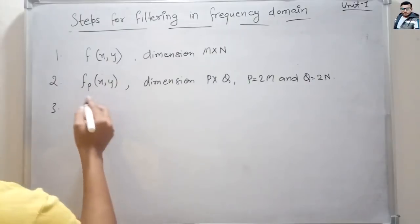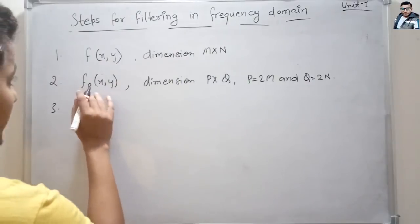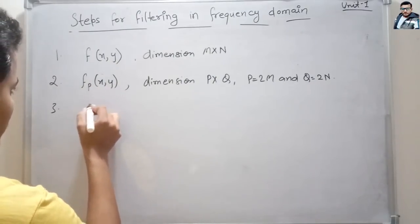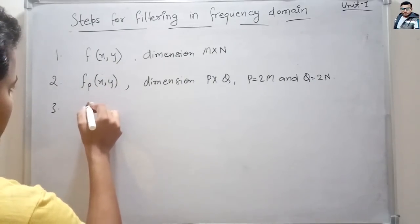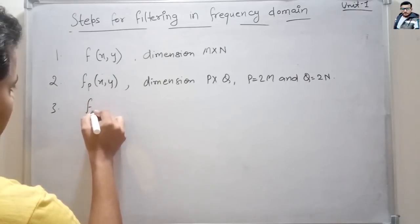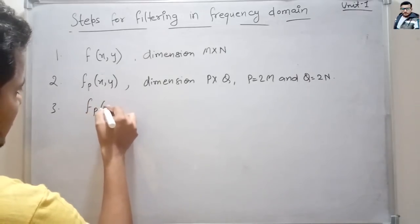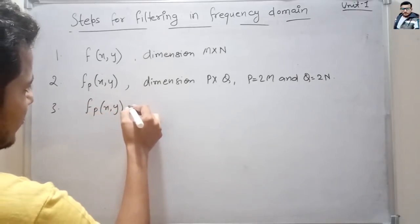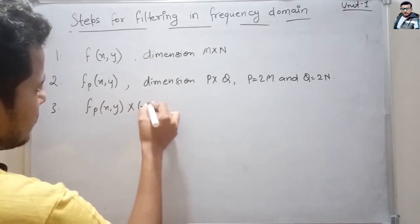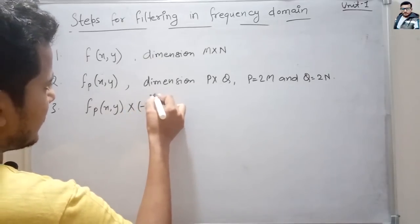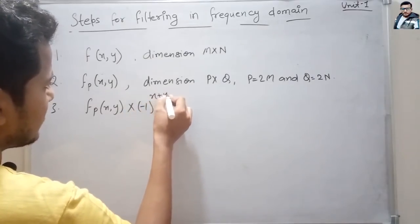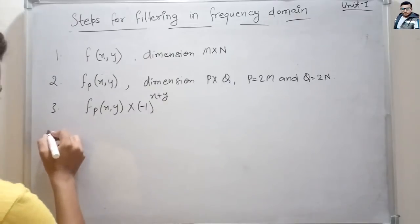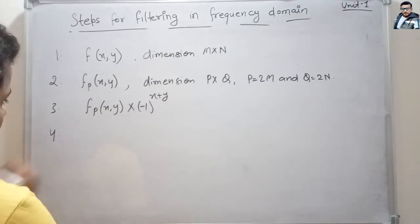Now, to centralize this image, we will multiply it with (-1)^(x+y). So the next step is to multiply the image with (-1)^(x+y).